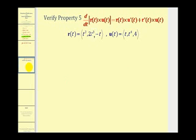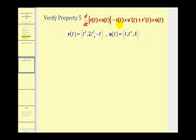Property five tells us that the derivative of the cross product of vector valued functions r and u equals r cross the derivative of u, plus the derivative of r cross u. On this screen we'll find the derivative of the cross product using two vectors, then on the next screen we'll determine the right side of this equation and make sure they're equal. Let's start by finding r crossed with u.